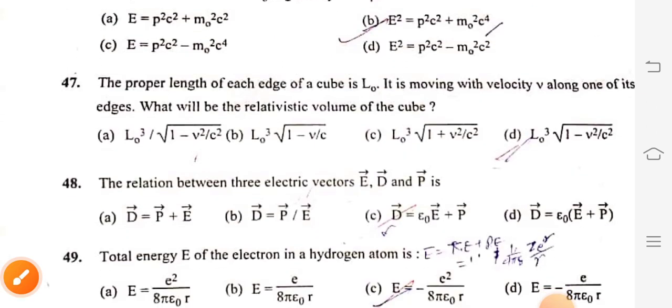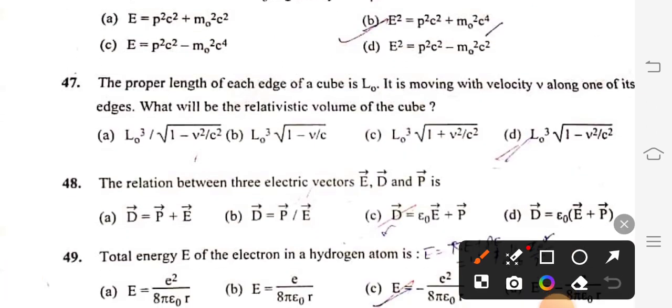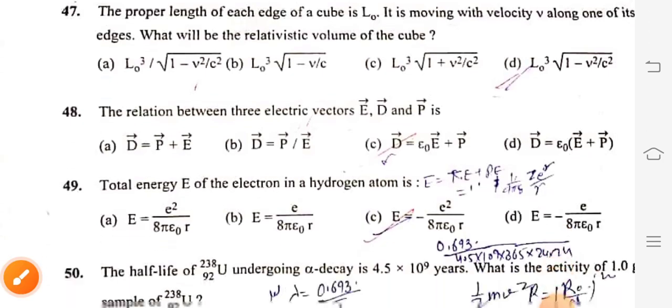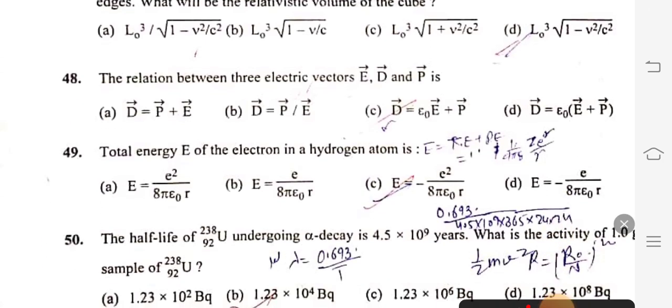Question 47: The proper length of each edge of a cube is L0. It is moving with velocity V along one of its edge. What will be the relativistic volume of the cube? Right option is L0 cube times root 1 minus V square by C square, option D. Question 48: The relation between three electric vectors E vector, D vector and P vector is D vector equals epsilon naught E vector plus P vector, option C.